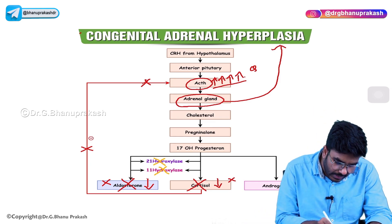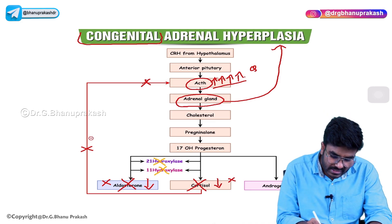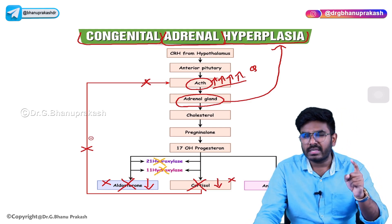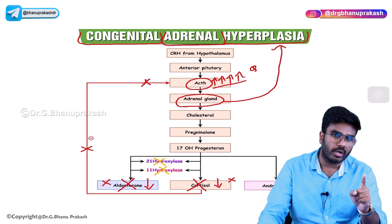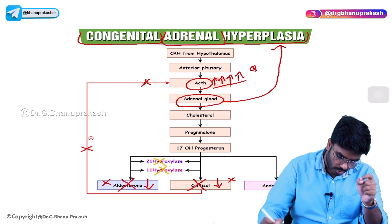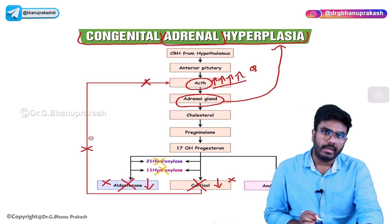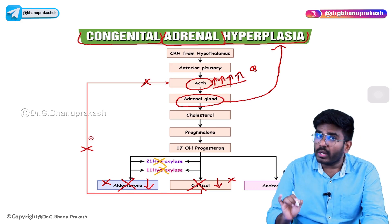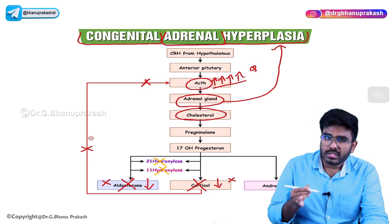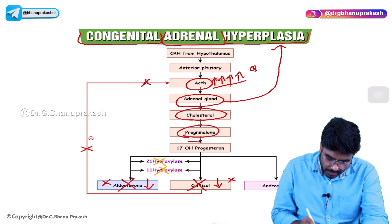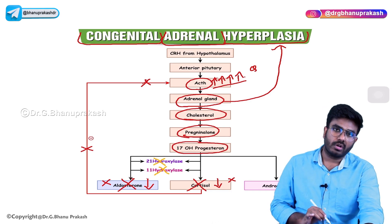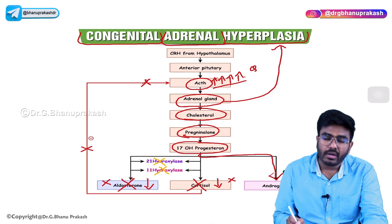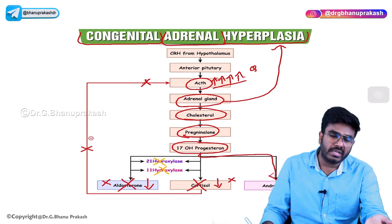Because of excessive ACTH stimulation, lots of cholesterol is converted into pregnenolone, which is converted into 17-hydroxyprogesterone. Now, all molecules of 17-hydroxyprogesterone are entering into the pathway of androgens. There is excessive androgen production in this baby. If it's a male fetus, there won't be much problem because androgens are common in males. But imagine if this is a female fetus — she is suffering with congenital adrenal hyperplasia where there is an excessive amount of androgens.